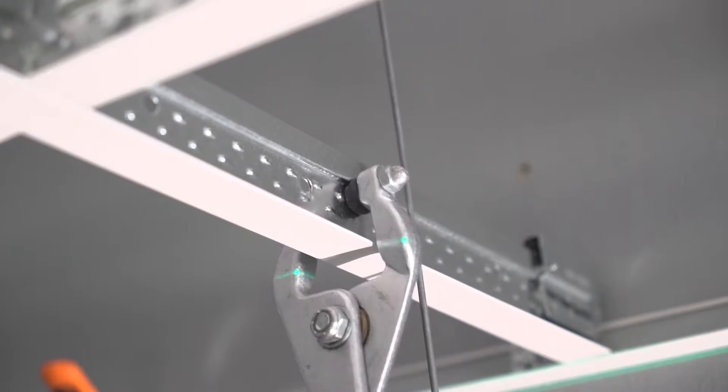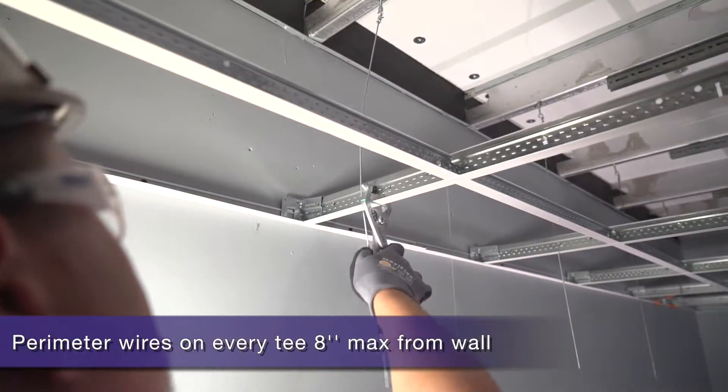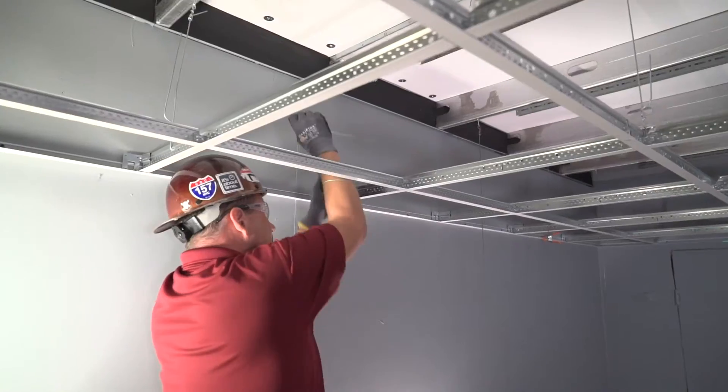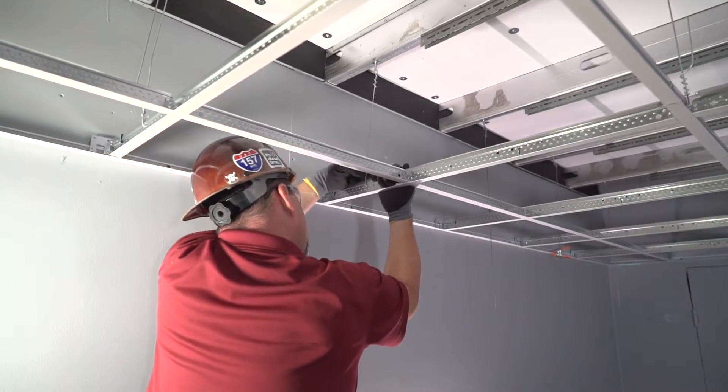First, perimeter wires. Well, you still have to install those as you would traditionally per code. In seismic DEF, install a perimeter hanger wire to the main tees or cross tees no more than eight inches from the wall.